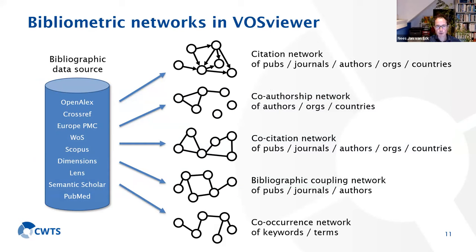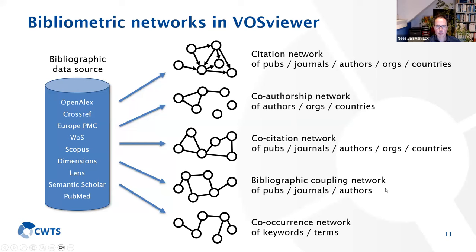The most straightforward type of network is a citation network of publications, where the items are publications and a link between two publications indicates a citation relation. We also have co-authorship networks, which are especially helpful to analyze how authors, organizations, or countries collaborate in science. We have support for co-citation networks and bibliographic coupling networks — networks based on citation relations — and co-occurrence networks of keywords and terms identified from titles and abstracts, which are especially helpful for an overview of important topics in the literature.